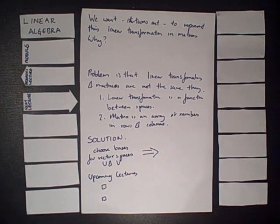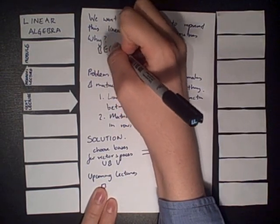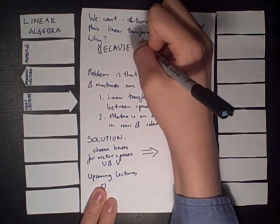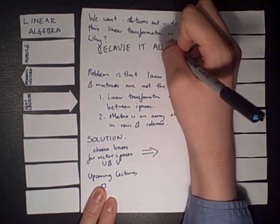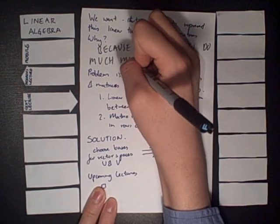Okay, now we have this concept of linear transformations in our mind. However, it's not that useful. We can't do much with it. However, if we can somehow represent this process using a matrix, then this will allow us to explore much more about this process of linear transformations. So we want to represent this linear transformation in matrices. Why? Because it allows us to do much more math.